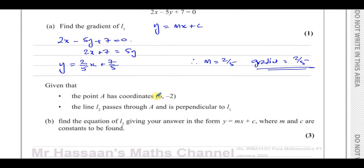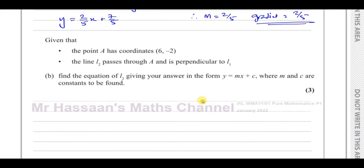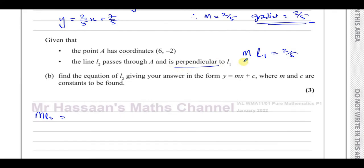Part B says: given that point A has coordinates (6, -2) and line L2 passes through A and is perpendicular to line 1, find the equation of line 2 in the form y equals mx plus c. The gradient of line 1 is 2 fifths, so the gradient of line 2 is the negative reciprocal, which is minus 5 over 2, because when two lines are perpendicular, the product of their gradients is negative 1.